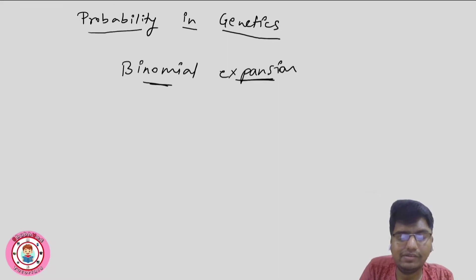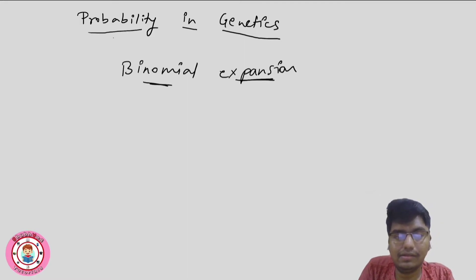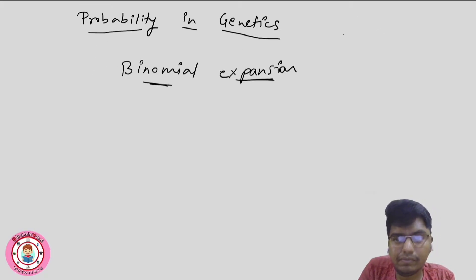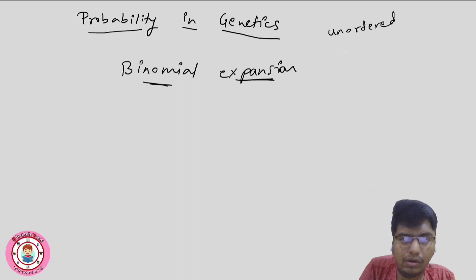What is binomial expansion? Carefully note when to use which formula — that is very important, you have to understand. Binomial expansion is used for unordered combination of events.